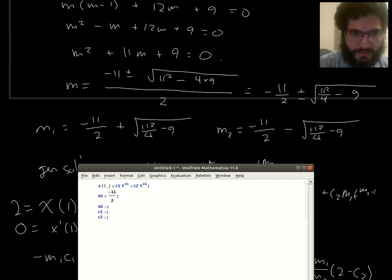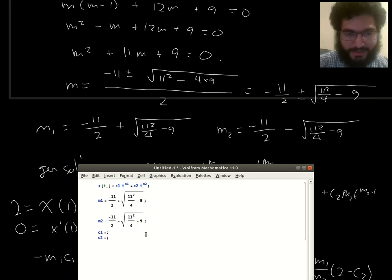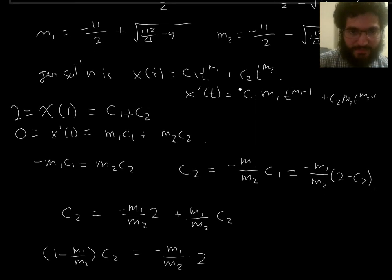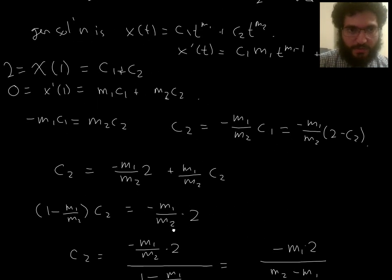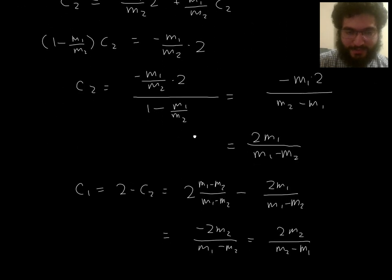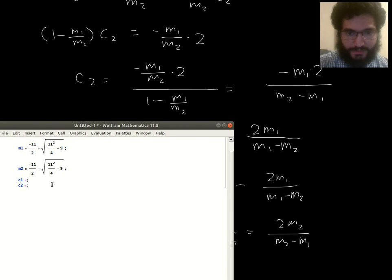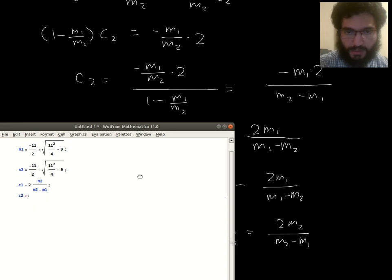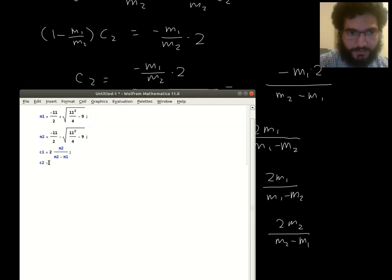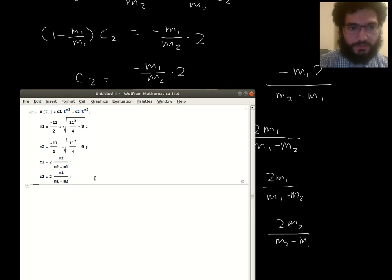So I've got minus 11 halves plus, and then the same thing but with a minus. And if I can find what I got for c1, 2m2 over m2 minus m1. And for c2, I got 2m1 over m1 minus m2. Okay. So there. No errors. Good.